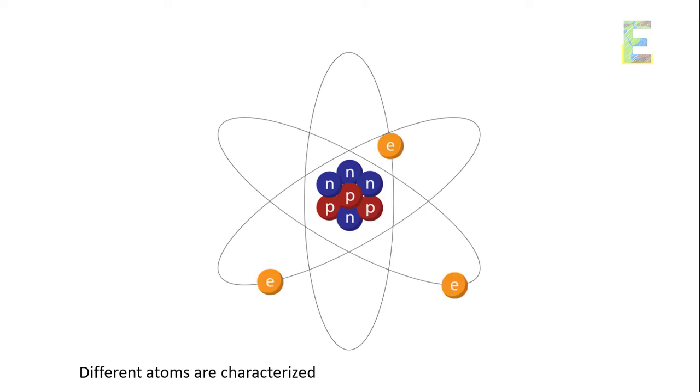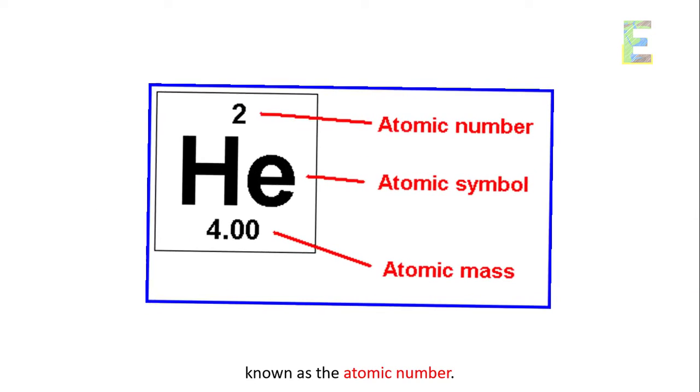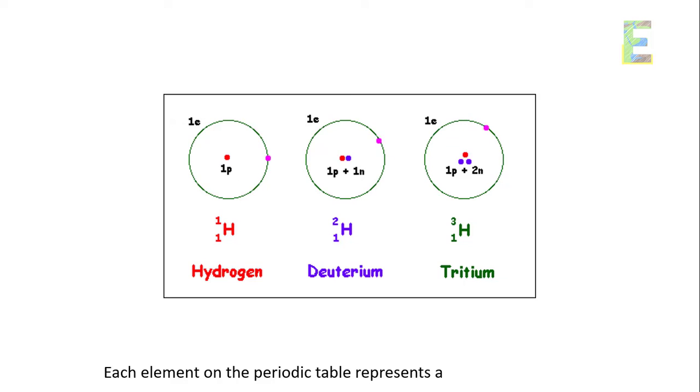Elements. Different atoms are characterized by the number of protons in their nucleus, known as the atomic number. Each element on the periodic table represents a unique type of chemical atom.